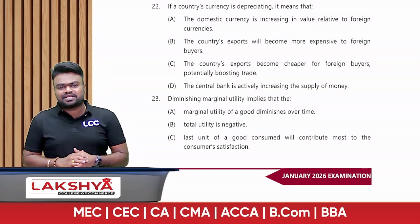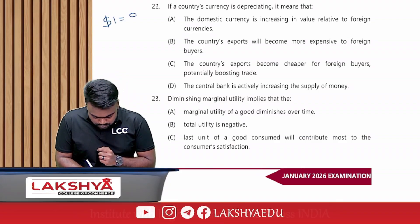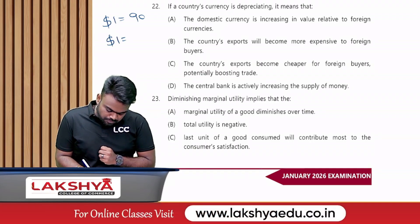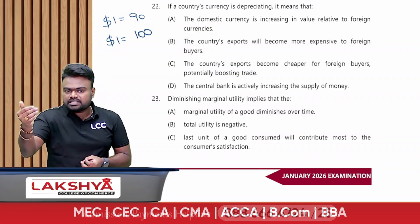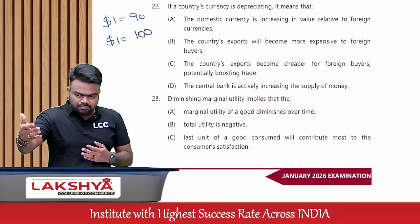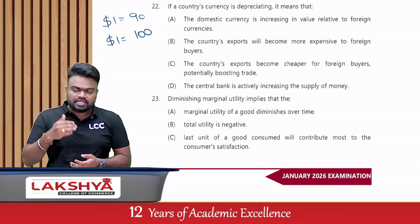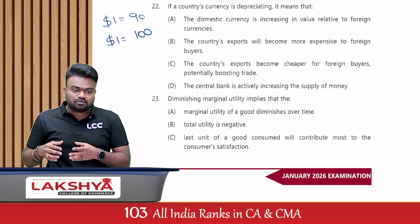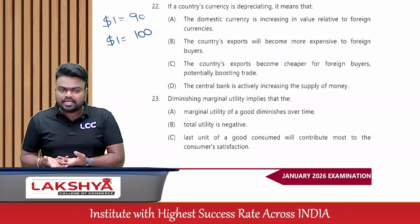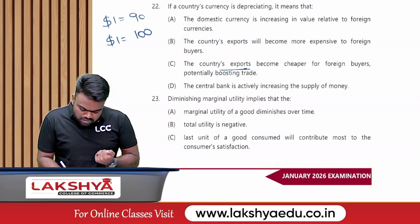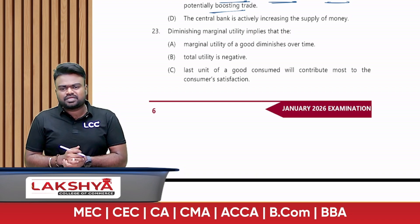If a country's currency is depreciating, it means what? For example, if one dollar equals 90 rupees and then becomes 100 rupees, that is currency depreciation. Earlier, a foreigner giving one dollar received 90 rupees' worth of goods from India; now they receive 100 rupees' worth of goods — more goods. So the country's exports become cheaper for foreign buyers, which automatically boosts exports.